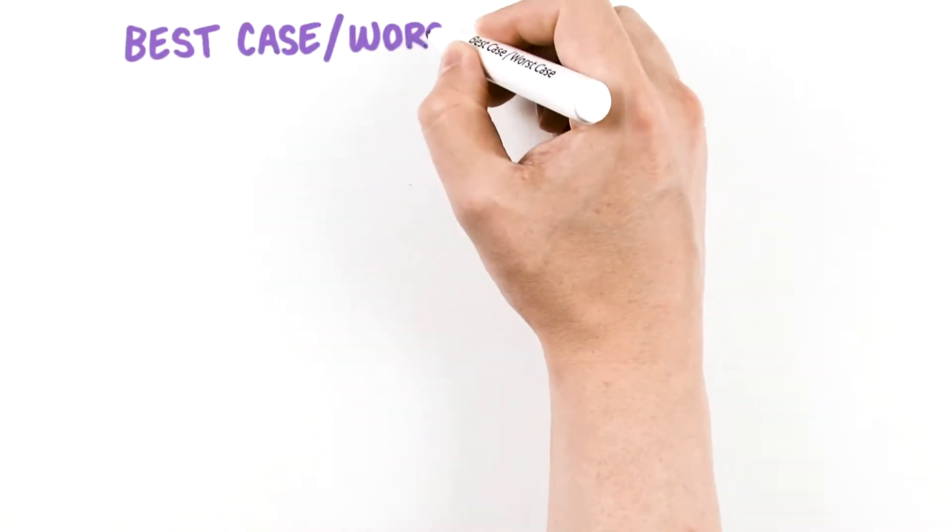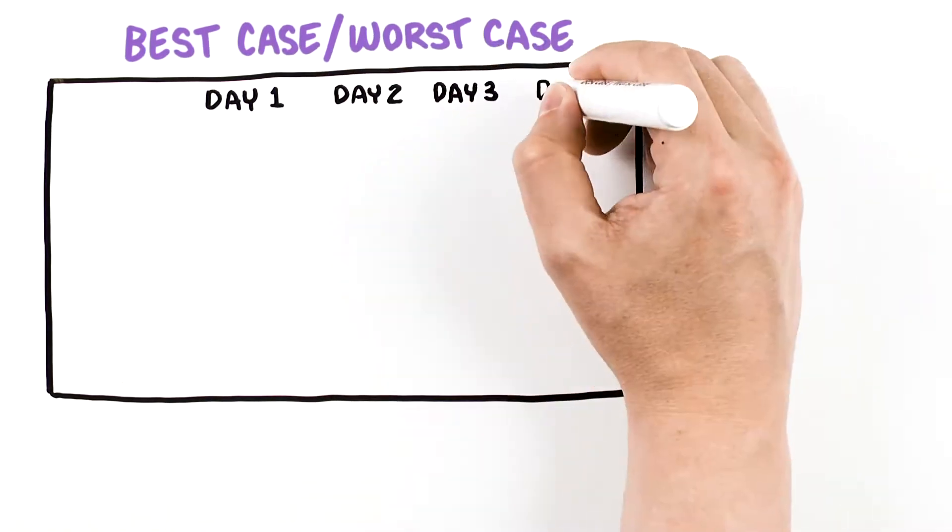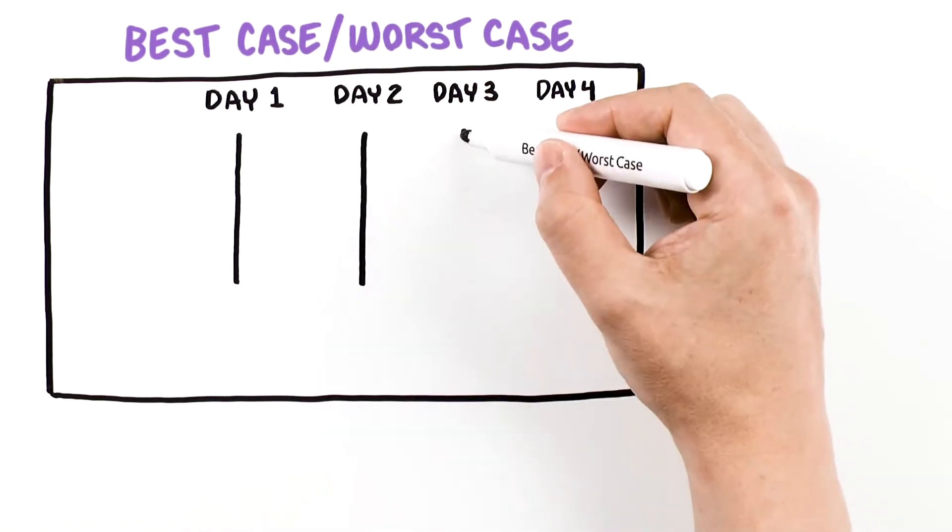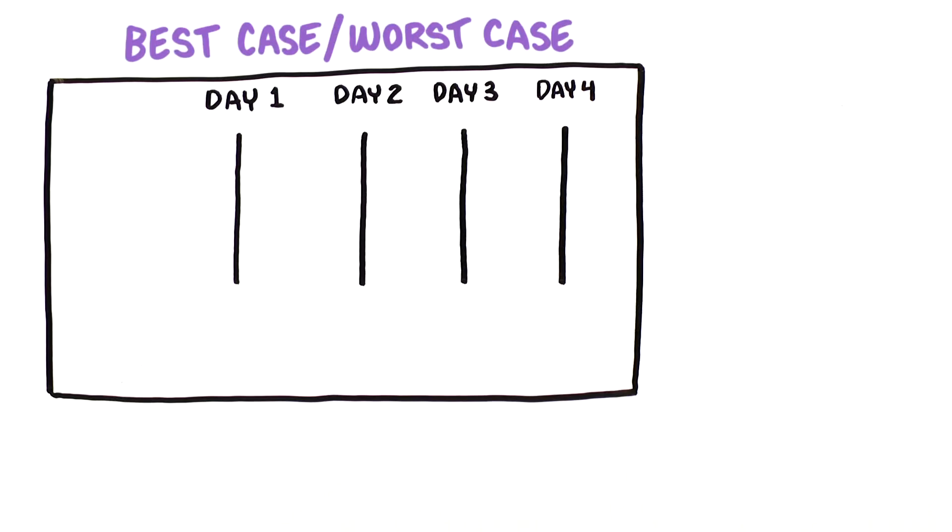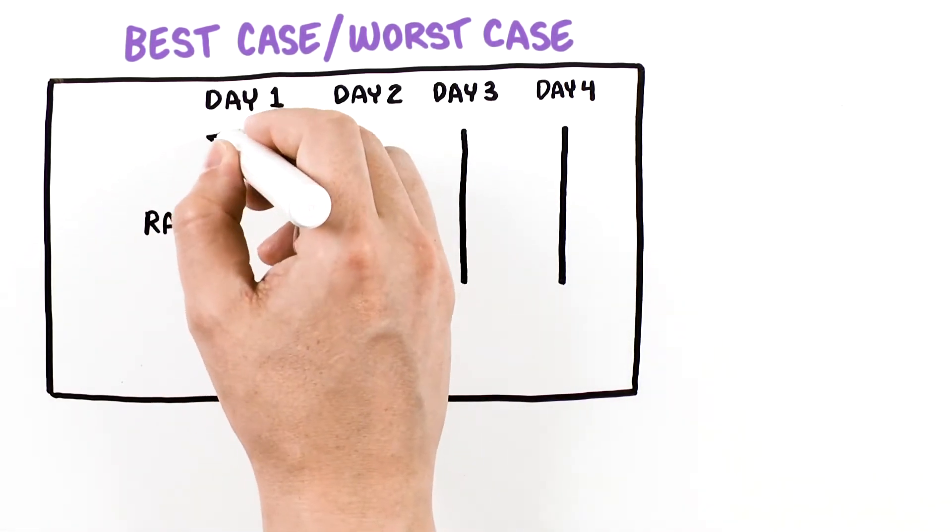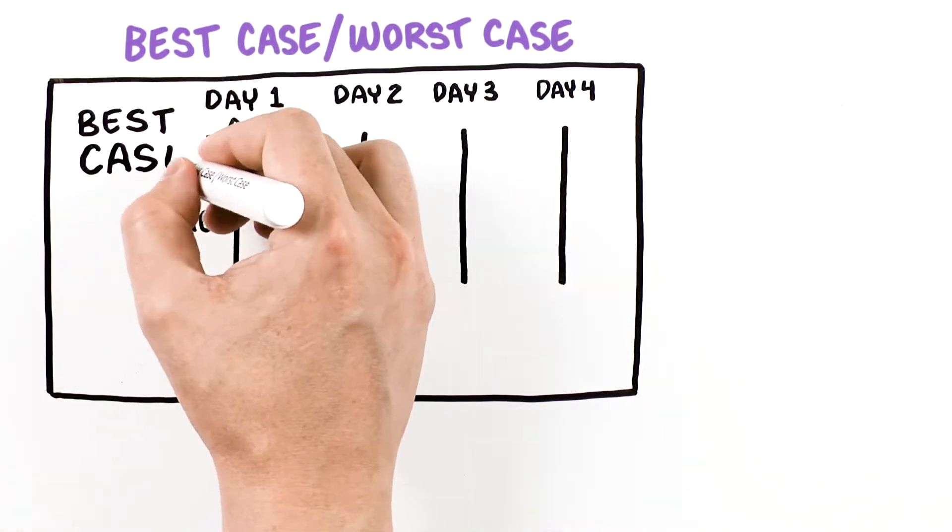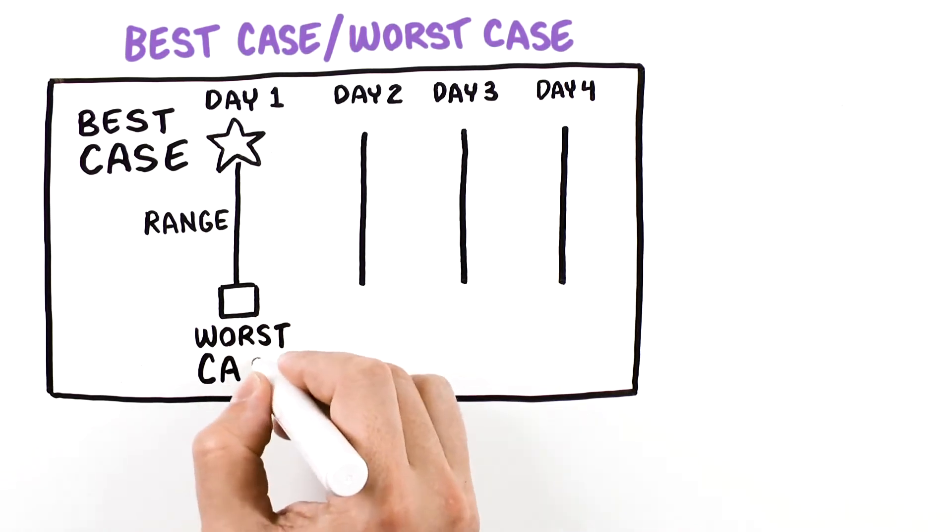Let's look at the Best Case Worst Case graphic aid. Each column represents one ICU day. Vertical lines represent the range of possible scenarios, describing how this new illness or injury will play out over time. The star represents the best case scenario, and the box at the bottom represents the worst case scenario.